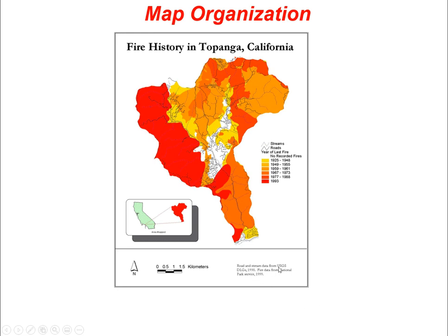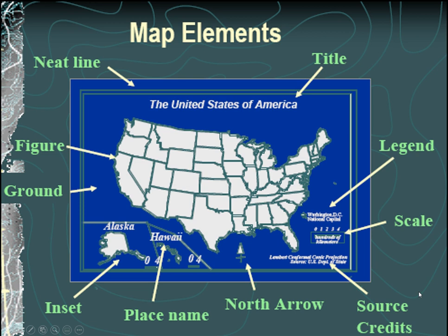Here's an example showing some of these elements. The source citation is placed in the center — very important. There's also an inset, which is a little mini map on the side. The legend title here says 'year of last fire,' which is much more descriptive than just saying 'legend.' Another example shows title, legend, scale, source credits, north arrow, and labeling. Alaska and Hawaii are placed in insets because they don't geographically belong beside the contiguous states. There's also a background referred to as 'ground,' the figure which is the map itself, and the neat line.